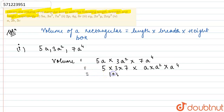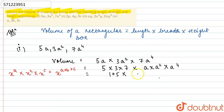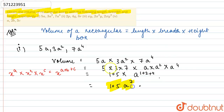5 × 3 × 7 is nothing but 105. Now remember one property of exponents: when the bases are the same and they are in multiplication, the exponents get added, so it becomes x^(a+b+c). Similarly here, the bases are the same and in multiplication, so the exponents get added: a^(1+2+4), giving us 105a⁷. This is the answer for the volume for part one.